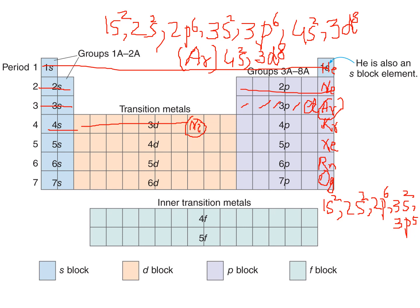Similarly for chlorine: the noble gas before chlorine is neon. So we write neon in brackets, then 3s² which is complete, and 3p⁵. The condensed electronic configuration for chlorine is [Ne] 3s² 3p⁵.